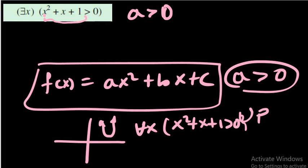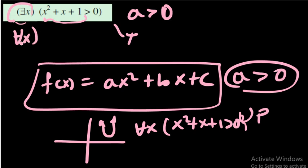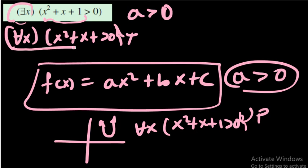No value of x yields a negative or zero result. Therefore, this statement is true — not only for the existential quantifier, but even for the universal quantifier: x² + x + 1 > 0 for all x. Both are true.